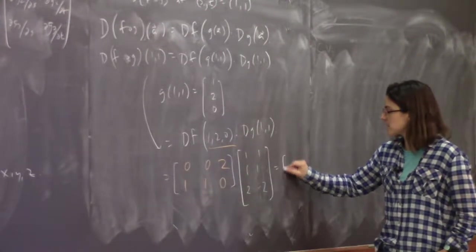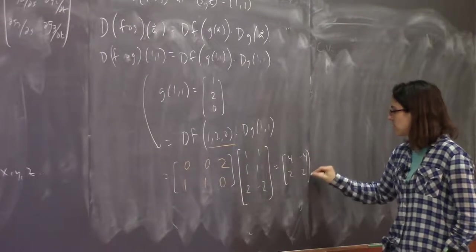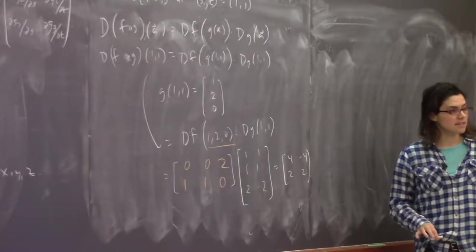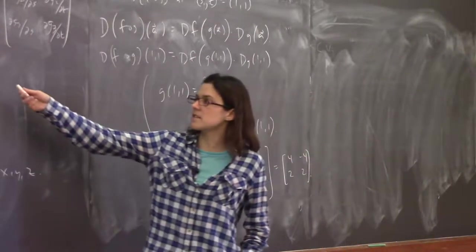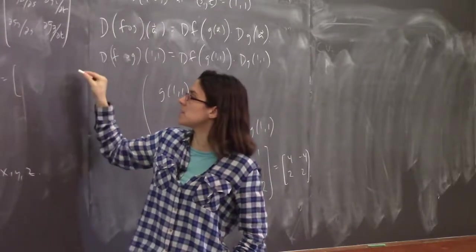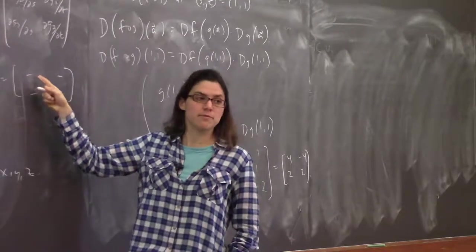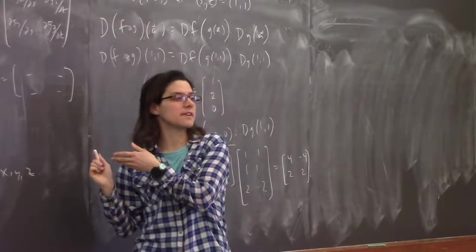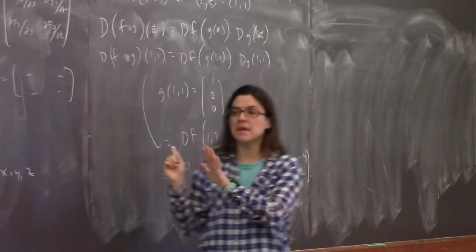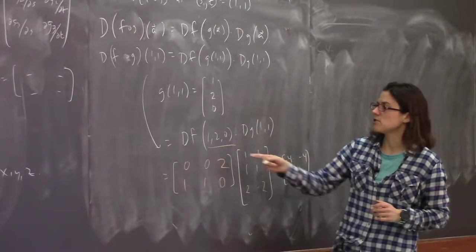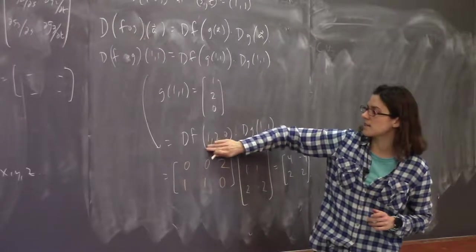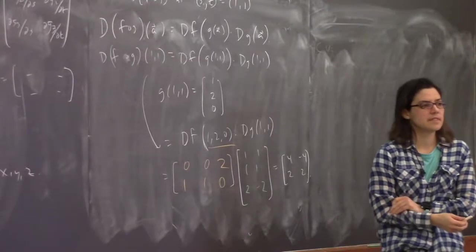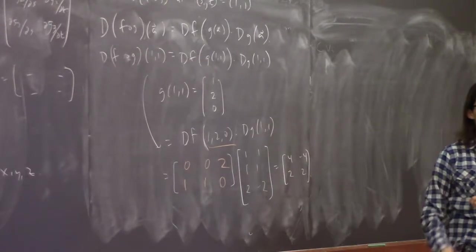It's perfectly reasonable and correct to multiply these matrices out to get a 2×2 matrix, substitute the s and t functions for x, y, z, and then plug in 1 and 1 for s and t. But it may be simpler sometimes — like in this case — to just figure out what x, y, z are as functions of s and t and then plug in.